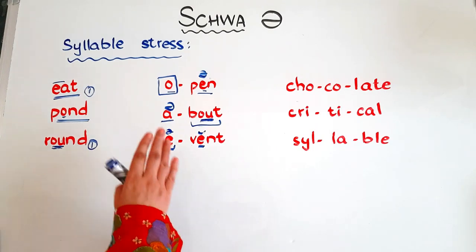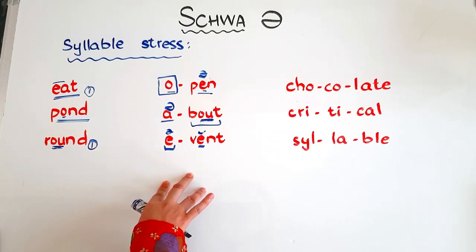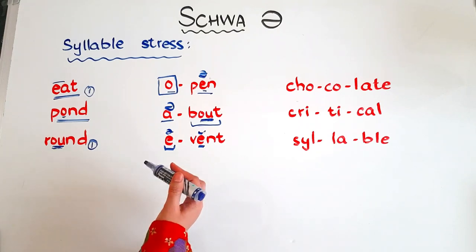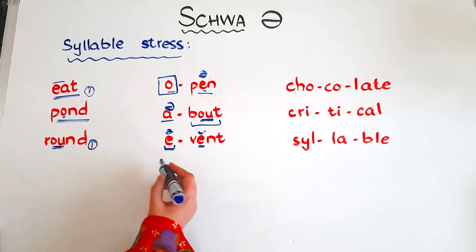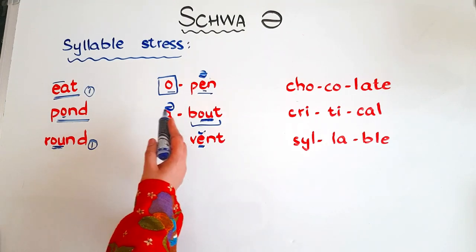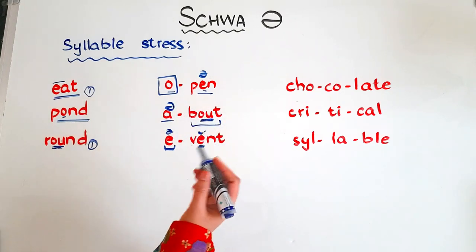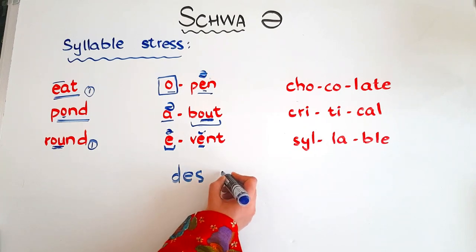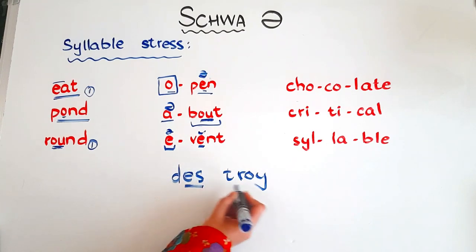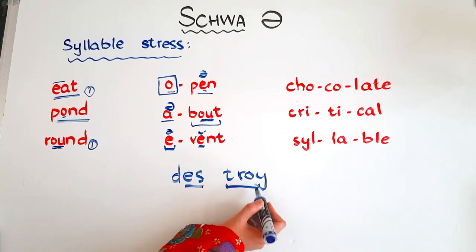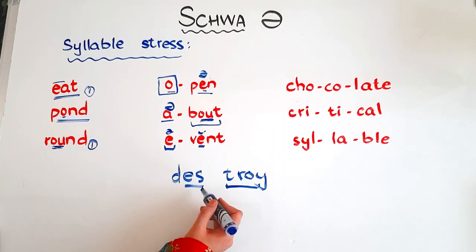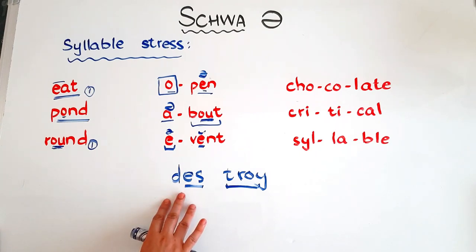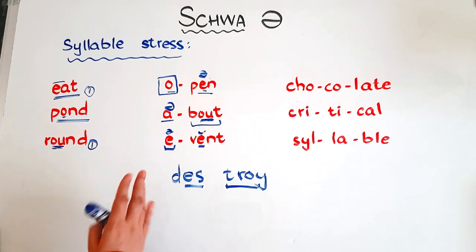But remember, when you are dictating these kinds of words to your children or students, you should not say these words with their schwa sound. Say them as you spell them. For example, if the word is 'event,' say it 'ee-vent.' If the word is 'open,' say it 'o-pen.' If the word is 'destroy,' say it 'de-stroy,' not 'destroy.' Because here 'troy' is the accented part, but 'de' has the schwa sound. However, we write it differently — we write 'destroy.' So you need to help children while writing these spellings, because we do not have any spelling rule for these words.